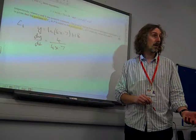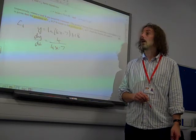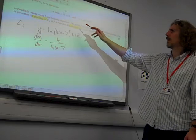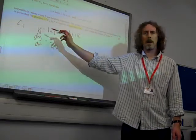The derivative of 4x minus 7 is 4. So that's dy by dx for curve 1. What are we told? At the point P, we need to know its gradient at the point P.